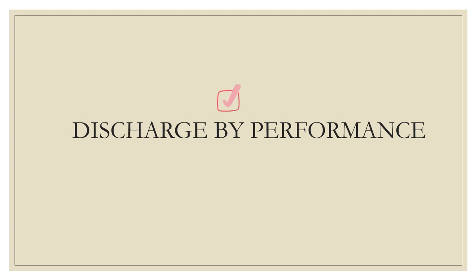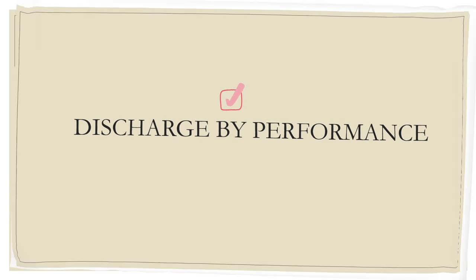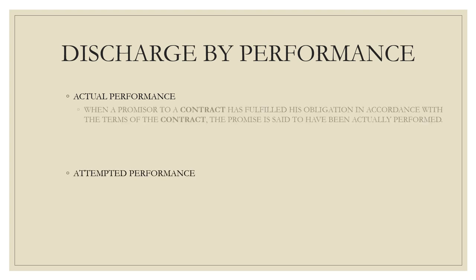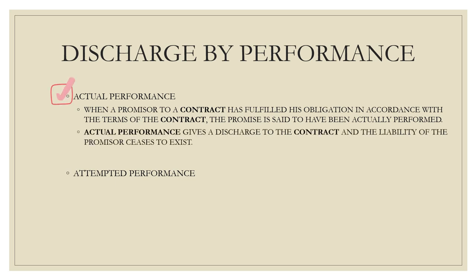Moving on to the first method: discharge by performance. This can be of two categories — actual performance or attempted performance. Actual performance is when the promisor has completed his obligations as per the terms and conditions of the contract. We say that he has performed the contract. Once he has performed the contract, all the liabilities and obligations come to an end.